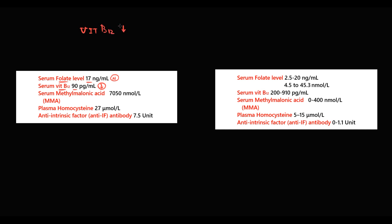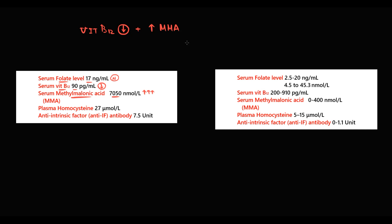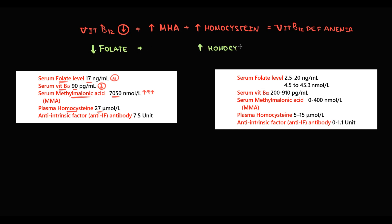Typically that's enough, but in some cases to be certain we determine the level of methylmalonic acid and homocysteine. In this case methylmalonic acid is significantly elevated and homocysteine is also elevated. Elevation of both confirms B12 deficiency anemia, because in folate deficiency the folate level will be low and only homocysteine will be increased — methylmalonic acid will be normal.